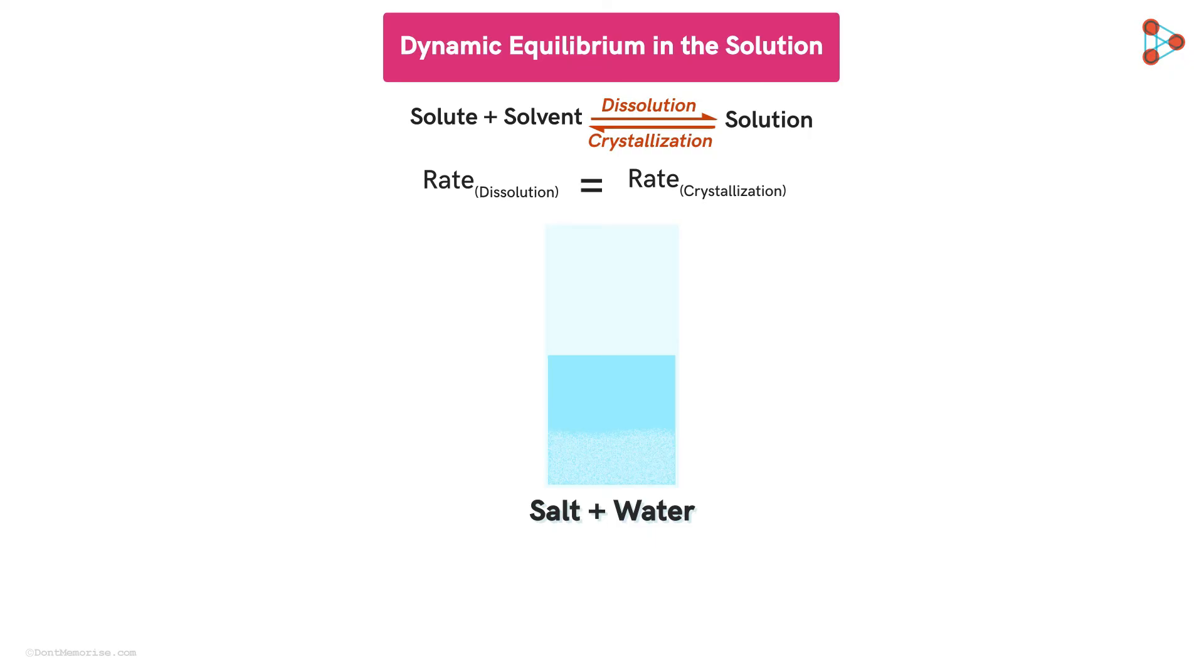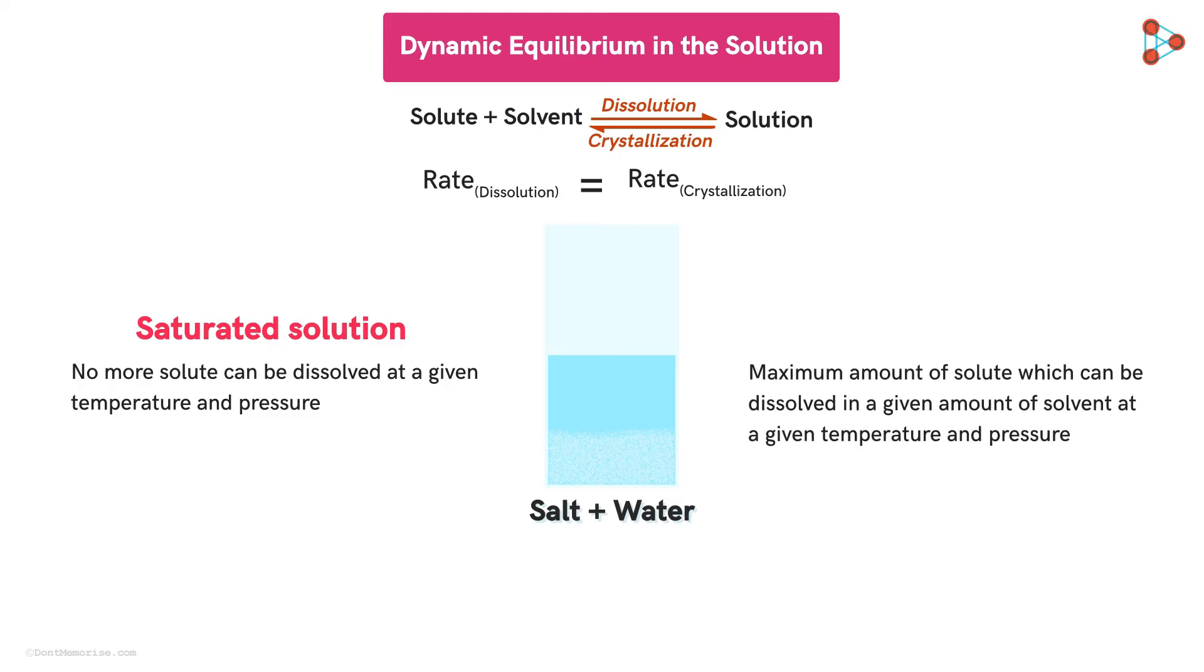A solution in which no more solute can be dissolved at a given temperature and pressure is called a saturated solution. At this point, we have reached the maximum amount of solute that can be dissolved in the solution at a given temperature and pressure. This maximum amount of solute is known as solubility of the solution.